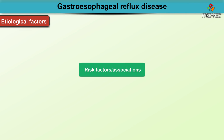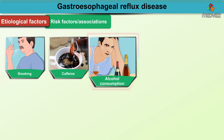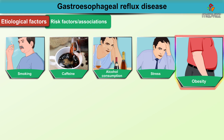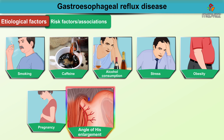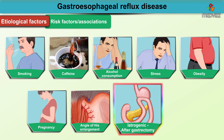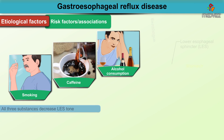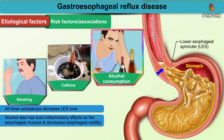Some of the important risk factors or associations with GERD include smoking, caffeine and alcohol consumption, stress, obesity, pregnancy, the angle of His enlargement, iatrogenic causes, and sliding hiatal hernia. Smoking, caffeine, and alcohol consumption decrease LES tone, whereas alcohol also has toxic inflammatory effects on the esophageal mucosa and decreases esophageal motility.